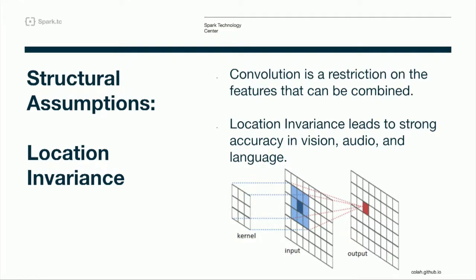This location invariance is an important part of why we're getting such good performance in sensory perception. However, you get this property in some datasets but not others. For a dataset asking for product recommendations based on web data, the features aren't intimately related by location — their interactions are around some other aspect of the data. Ideally you'd find the structural assumptions in that data and generate an algorithm that understood those assumptions, reducing the space of models it searches over sufficiently to generalize.